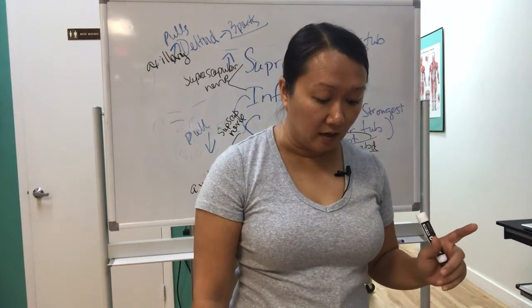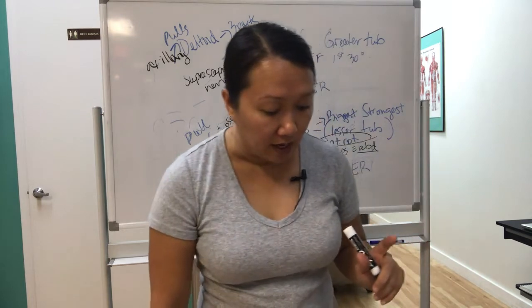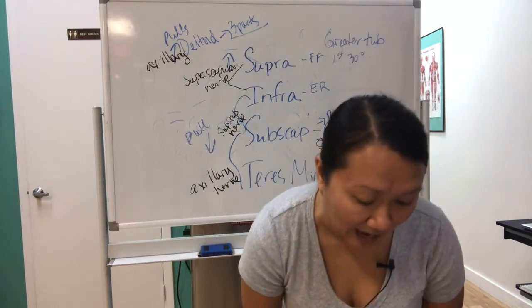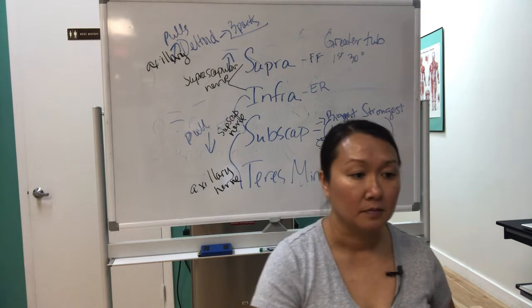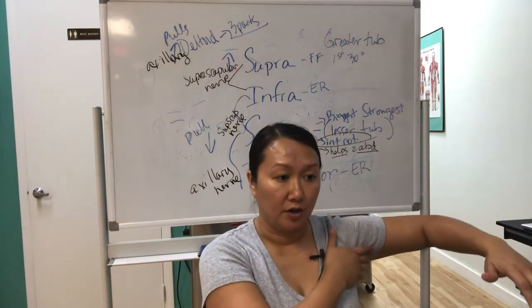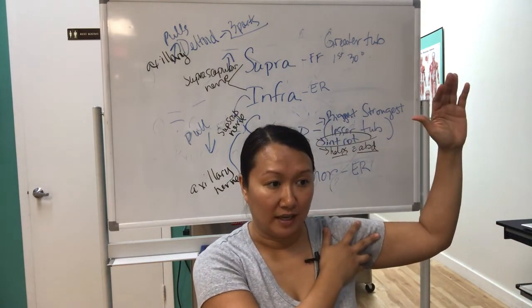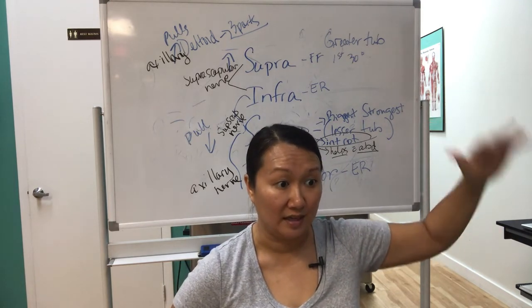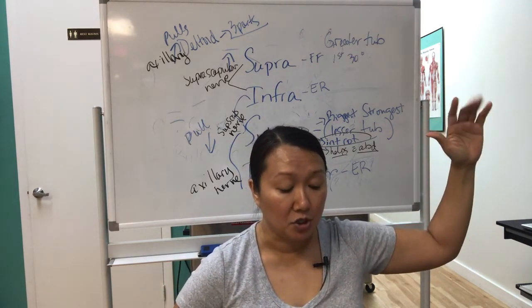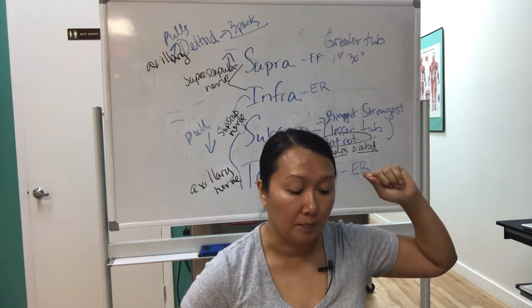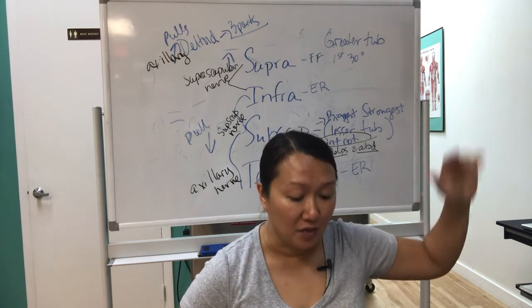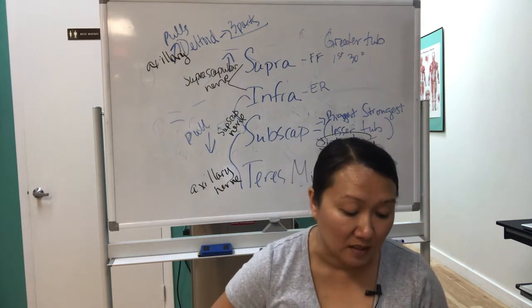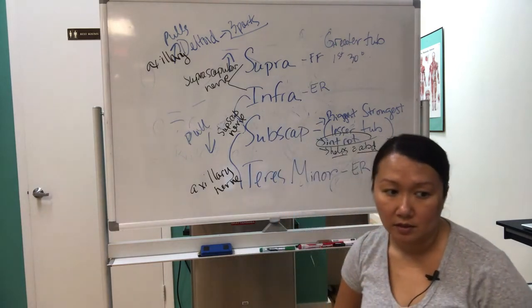The other lag that they talk about is a hornblower's lag. And the hornblower's lag is where they're going to be in abduction, and you're trying to get them to go into and hold that, go into external rotation in that abduction position. It's hornblower's test. And if they can't do that, that's more indicative of a teres minor tear.